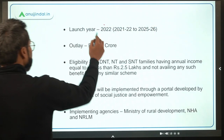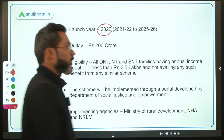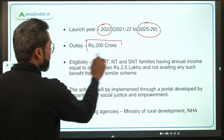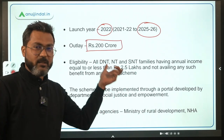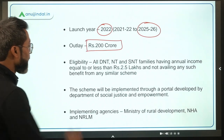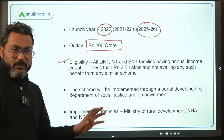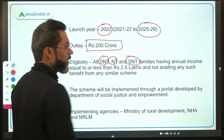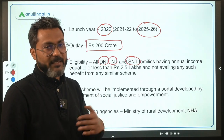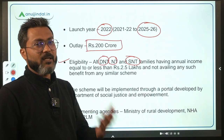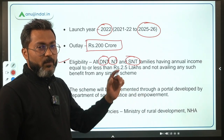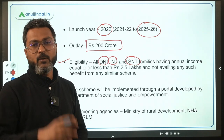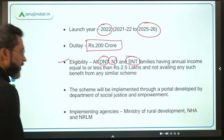The SEED scheme has been launched in 2022 and will be implemented up to the financial year 2026. The total outlay is approximately Rs. 200 crores. Families eligible for the scheme are all DNT, Nomadic Tribe, and Semi-Nomadic Tribe families having annual income equal to or less than Rs. 2.5 lakh per annum, provided they are not already getting benefits from any similar government scheme.